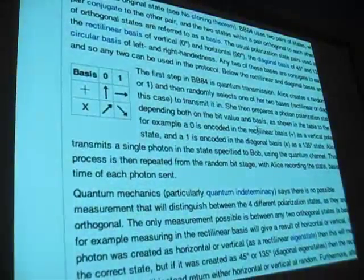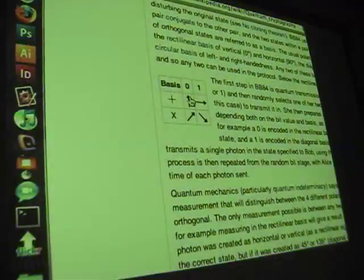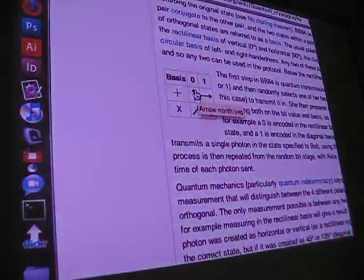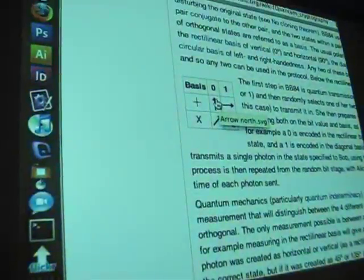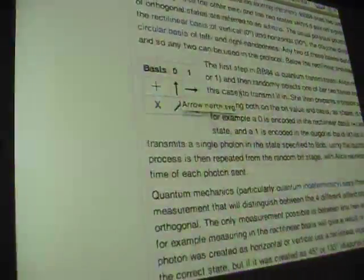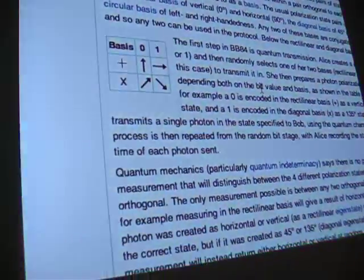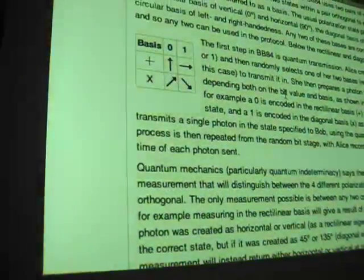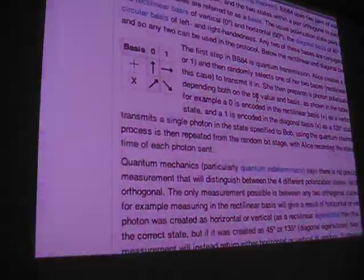You can send photons with different spins. The spins can be, as you can see here, north-south, or horizontal, or you can send it going diagonal, one way diagonal, the other way diagonal.